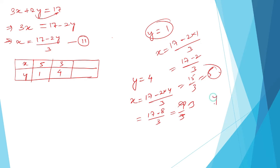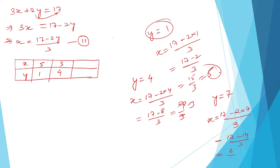Let's try another value. When y equals 7: x = (17 − 2×7) / 3 = (17 − 14) / 3 = 3/3 = 1. So when y equals 7, x equals 1.